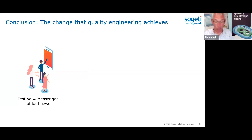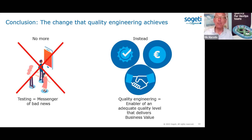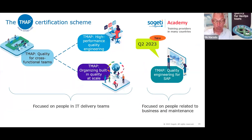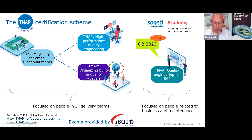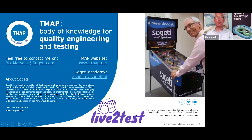In the old days, the tester used to be the messenger of bad news — but that's no more. Today we have quality engineering, which enables the team as a whole to deliver the business value that people are searching for. If you'd like to know more, go to tmap.net, or read the book available on ictbooks.com, Amazon, or wherever you like. You may also be interested in TMAP training courses and the TMAP certification website hosted by iSQI at tmapcert.com.